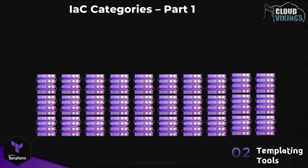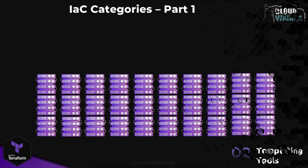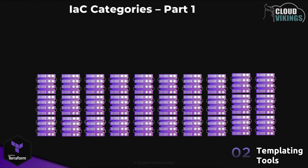If we needed to set up a hundred servers exactly the same way with the script method, we'd have to run our script code on each of these hundred servers so that the script can execute and get each server into the desired end state — the state where we have our operating system installed, all the software packages and configuration ready to go. To contrast this with the image templating technique, it avoids having to run our script over and over again on different servers, if all we want is to have a number of them in the exact same state.